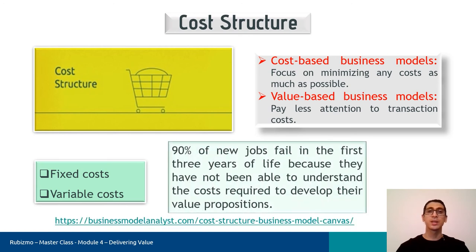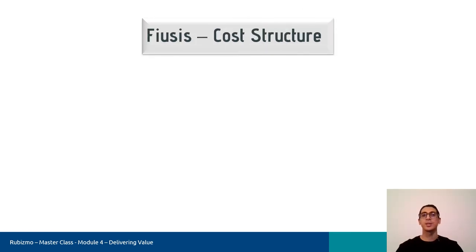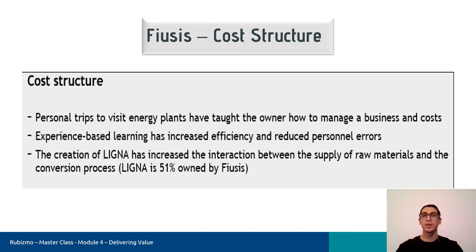Understanding costs is the key to success because 90% of new businesses fail in the first three years of life due to a lack of understanding the costs required to develop their value propositions. Back to the case: the company owner decided to visit many energy plants to be able to manage the business and costs. Experience-based learning has increased efficiency and decreased personal mistakes. And finally, the creation of Ligna has increased the interaction between the supply of raw materials and the conversion process.